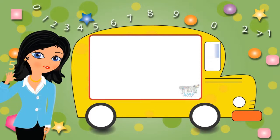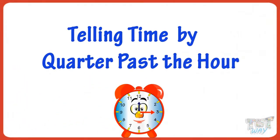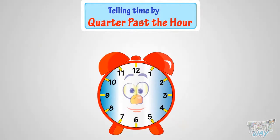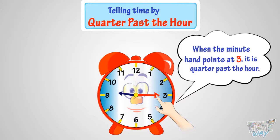Hi kids! Now we will learn telling time by quarter past the hour. When the minute hand points at three, it is quarter past the hour because the minute hand has moved quarter past the clock by then.